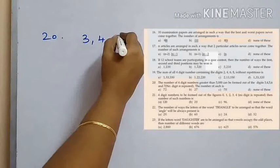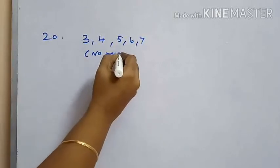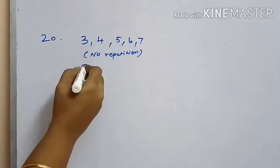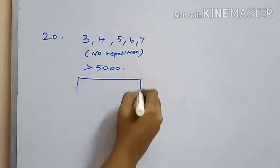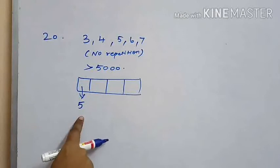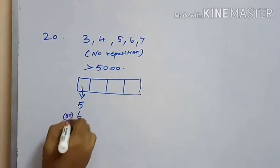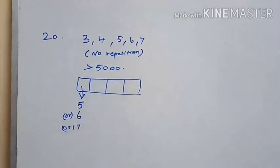Let's discuss question 20. The number of four-digit numbers greater than 5000 that can be formed out of the digits 3, 4, 5, 6, and 7 with no digit repeated. We use four boxes for the four-digit number. In the first position we can only have 5, 6, or 7, because the number must be greater than 5000.